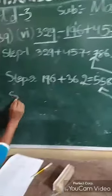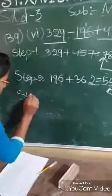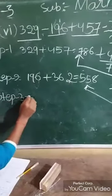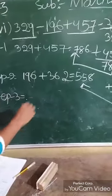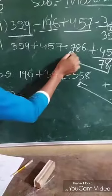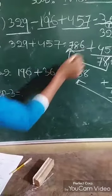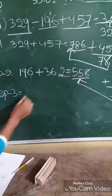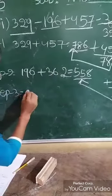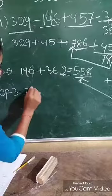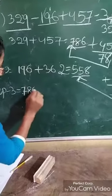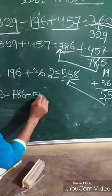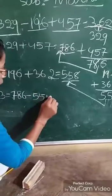Step 3: Subtract the second result from the first. That means 786 minus 558. This gives the simplified answer.